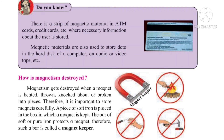Did you know? There is a strip of magnetic material in an ATM card or credit card, where the necessary information about the user is stored. Magnetic materials are also used to store data in the hard disk of a computer and in audio or videotapes.